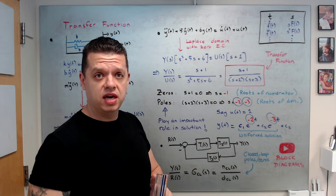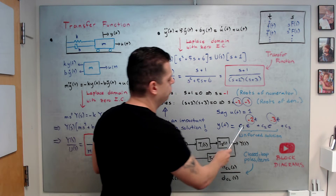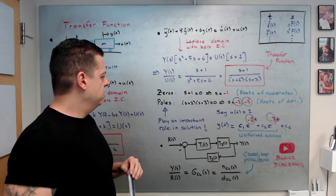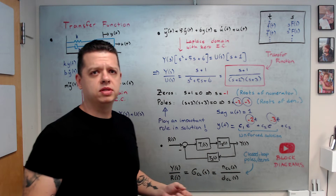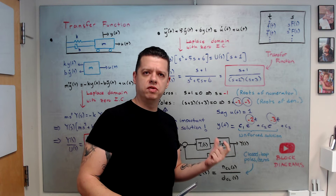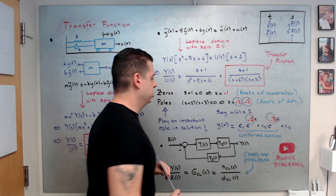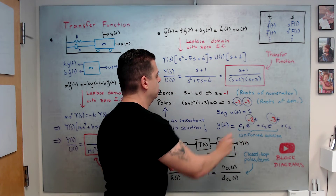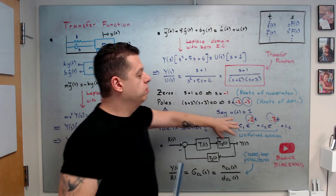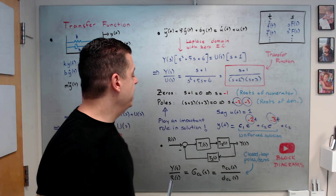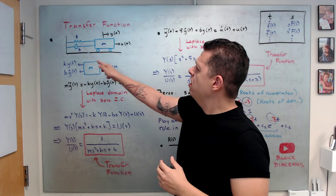This is why we care about poles. Zeros contribute to the constants in the solution and also play a role in assessing system performance and convergence. But for stability, the location of the poles is what matters, since the real parts of the poles appear directly in the exponential terms and need to be negative.